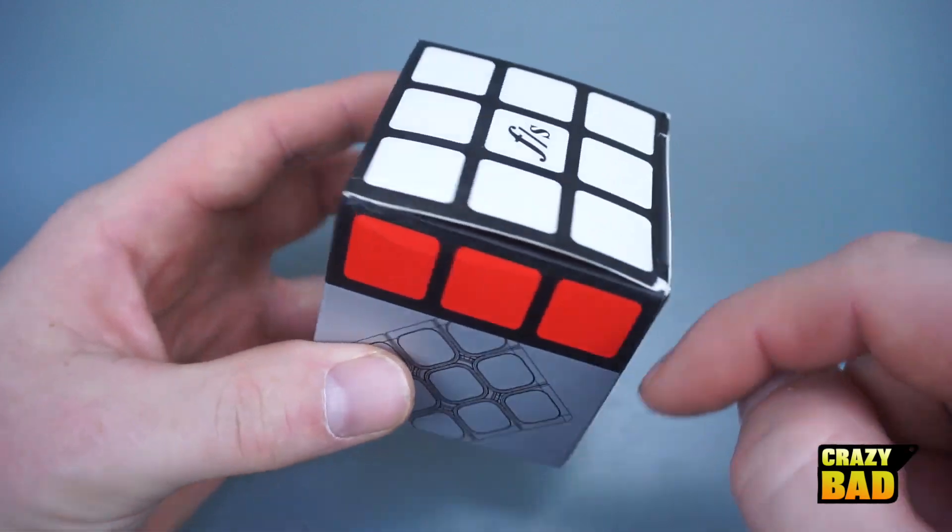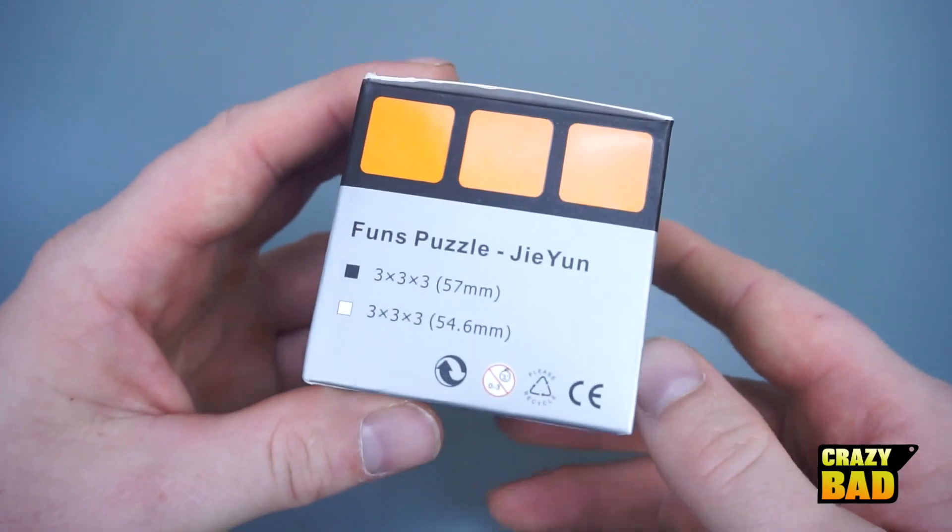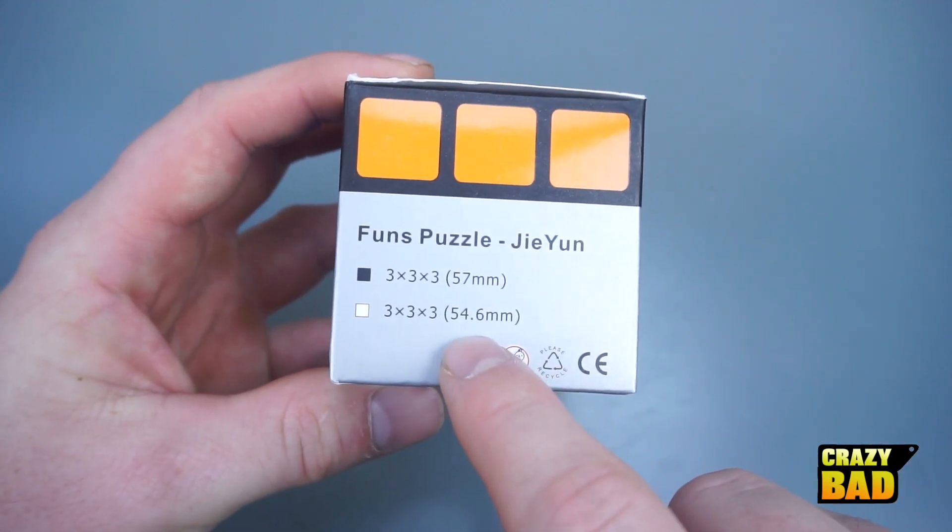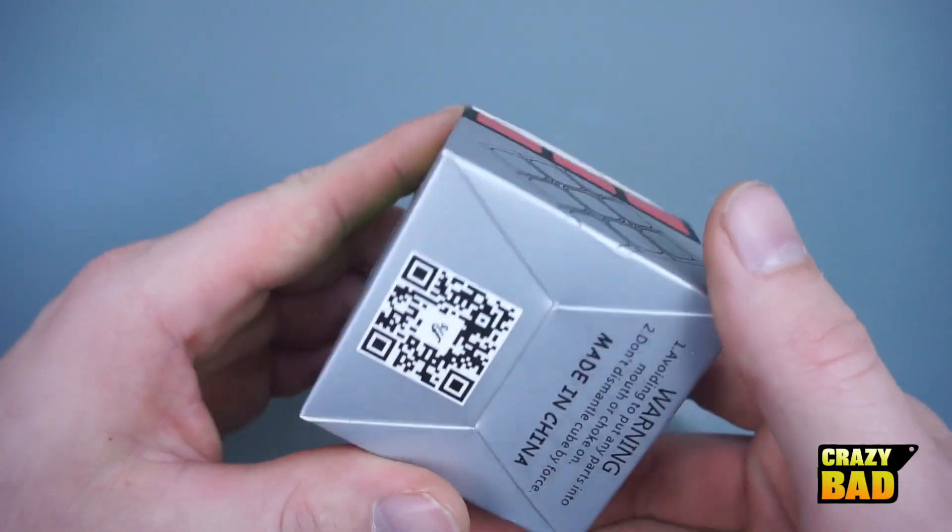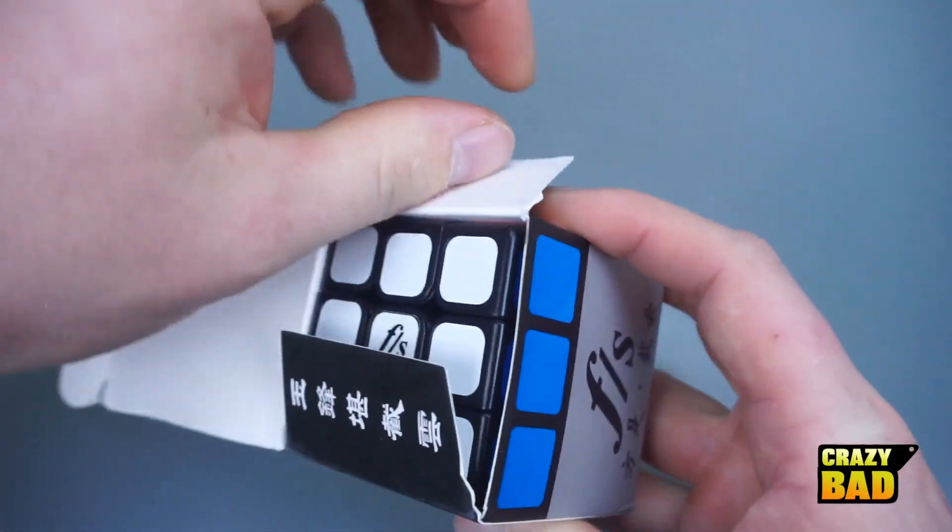I really like the way that Fangshi makes their boxes with the top layer being the actual cube. This is a 57 millimeter one. I guess they're gonna either have come out or will come out with a 54.6 millimeter as well. So anyways, let's go ahead and open this thing and take a look at it.